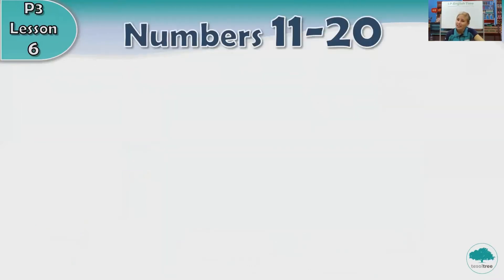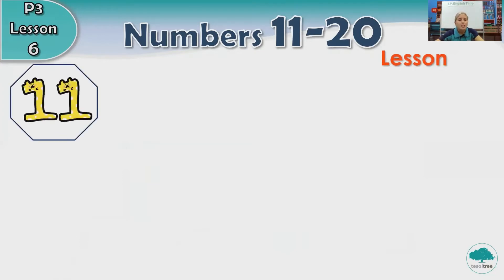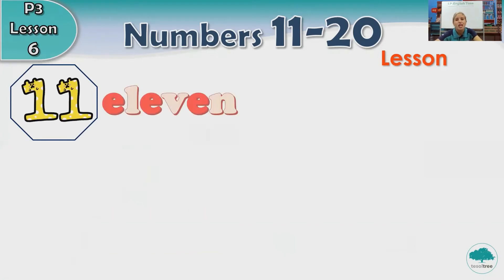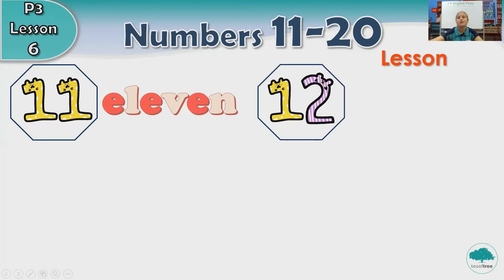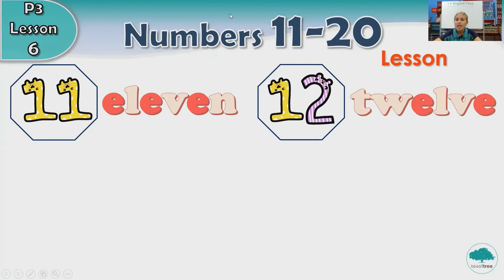Alright, let's start the lesson. Have a look at the number. What number is this? Number eleven. Very good. How do you spell eleven? E-L-E-V-E-N. Eleven. What comes after eleven? Number twelve. Very good. How do we spell twelve? T-W-E-L-V-E. Twelve.